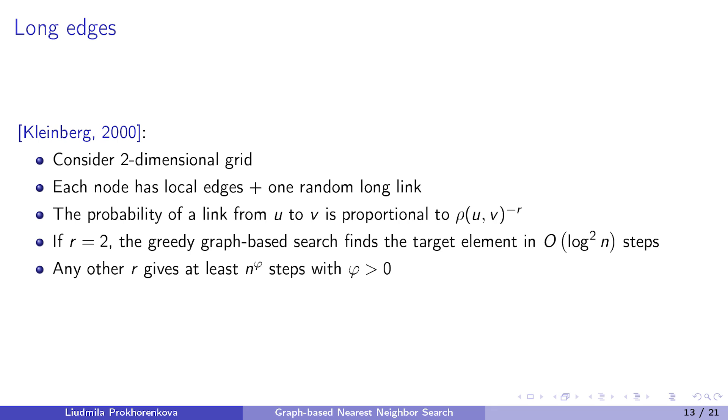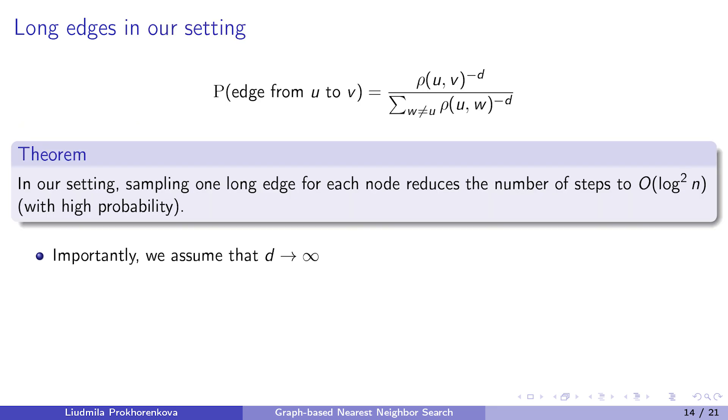This idea is closely related to the analysis made by Kleinberg 20 years ago. In his paper, Kleinberg considered a two-dimensional grid and assumed that in addition to local edges, each node also creates one random long link. The probability of a long link between two elements is assumed to be proportional to the distance between them to the power minus r. Kleinberg proved that only if r equals 2, the greedy graph-based search finds the target element in log squared n steps. Any other value gives at least n to some positive power steps.